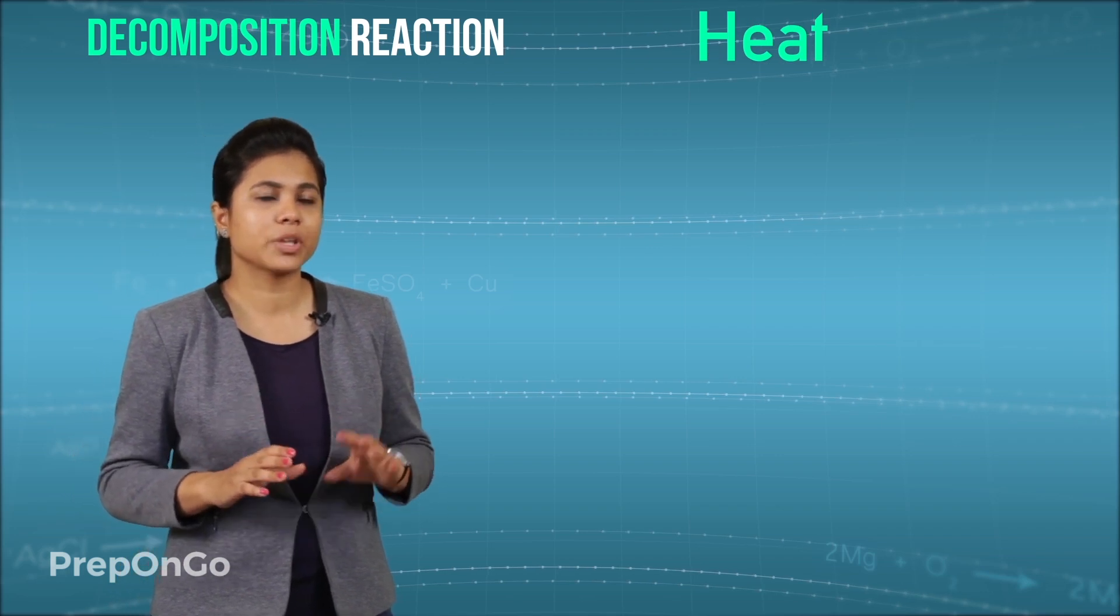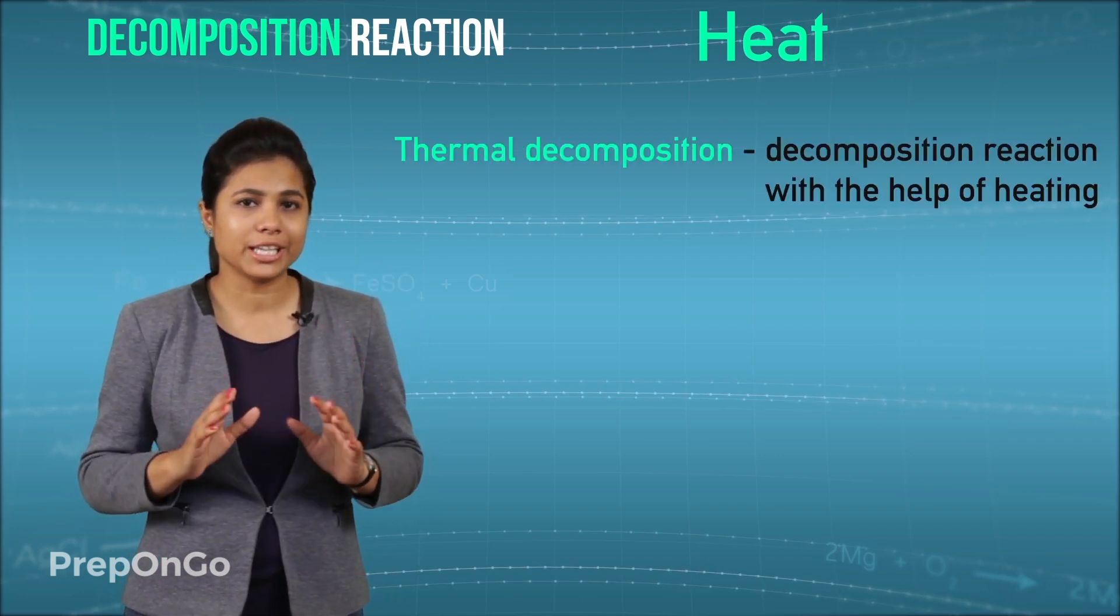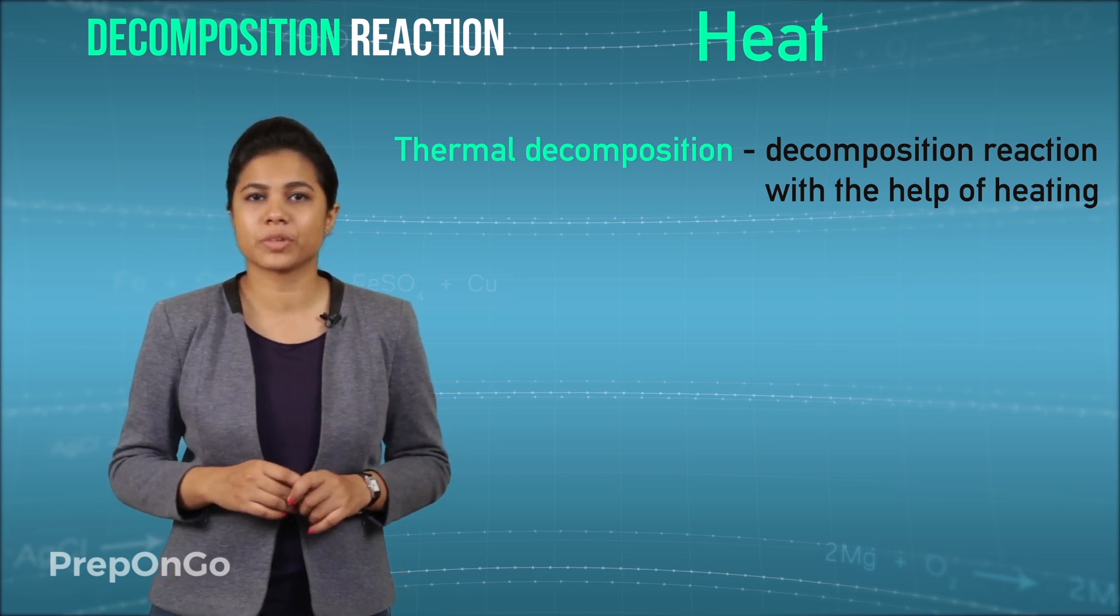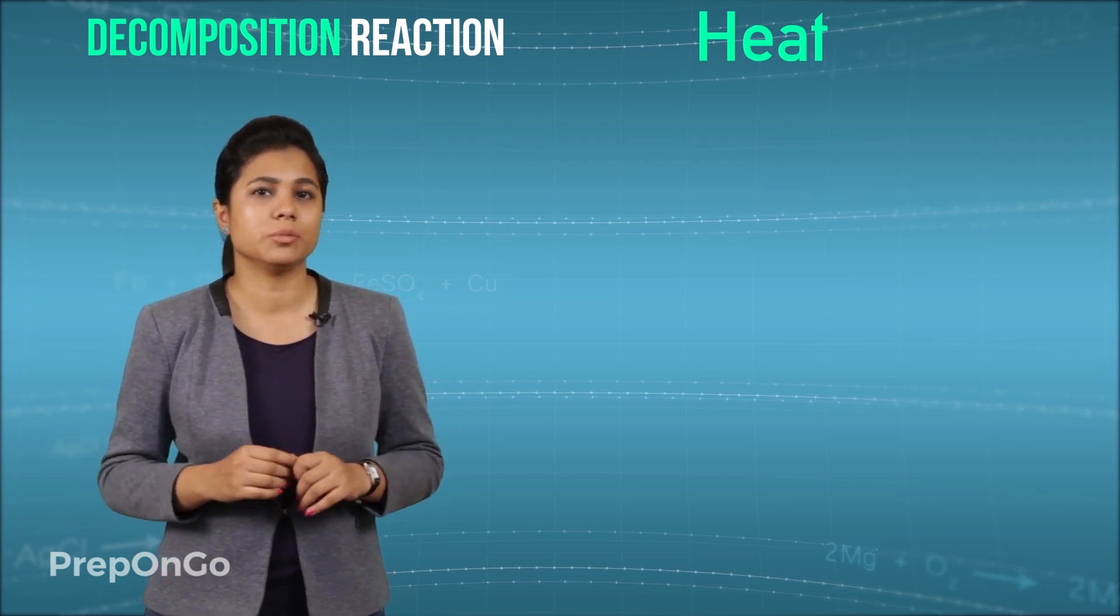So the first agent is heat. The reaction which takes place with the help of heat are called as thermal decomposition. We are going to see three examples of thermal decomposition.